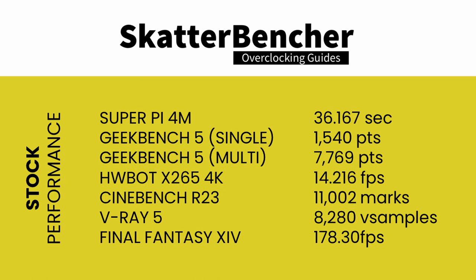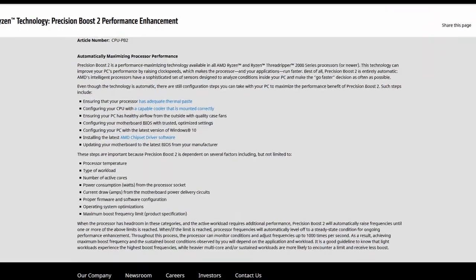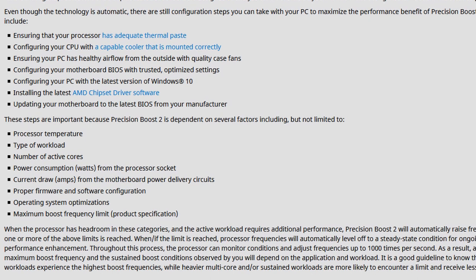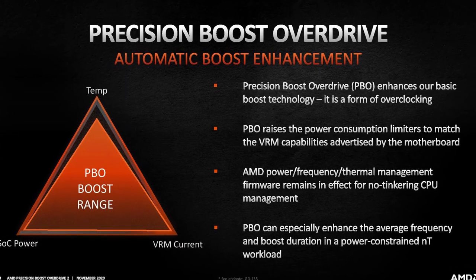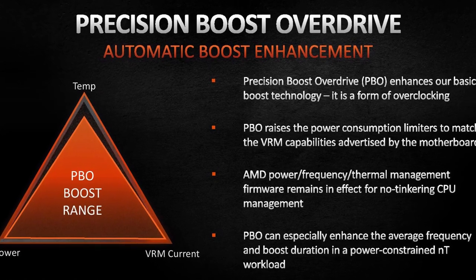Before we get started with pushing the performance of the AMD Ryzen 5 5600X processor, let's first take a look at the scoring at stock settings. As a first step, we wanted to enable Precision Boost Overdrive, but turns out this feature is by default enabled on this motherboard, so that makes it very easy. As a reminder, Precision Boost Overdrive aims to maximize the system performance in case you have adequate cooling and adequate components. The performance is determined by a variety of factors such as CPU temperature, type of workload, number of active cores, power consumption, current draw, and so on. When the processor has additional headroom, Precision Boost Overdrive will automatically raise the operating frequencies.